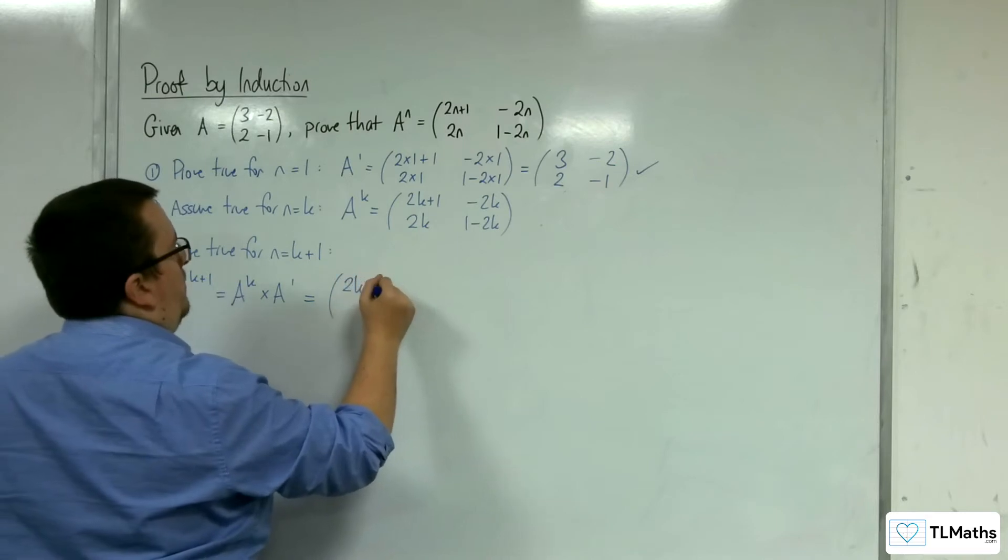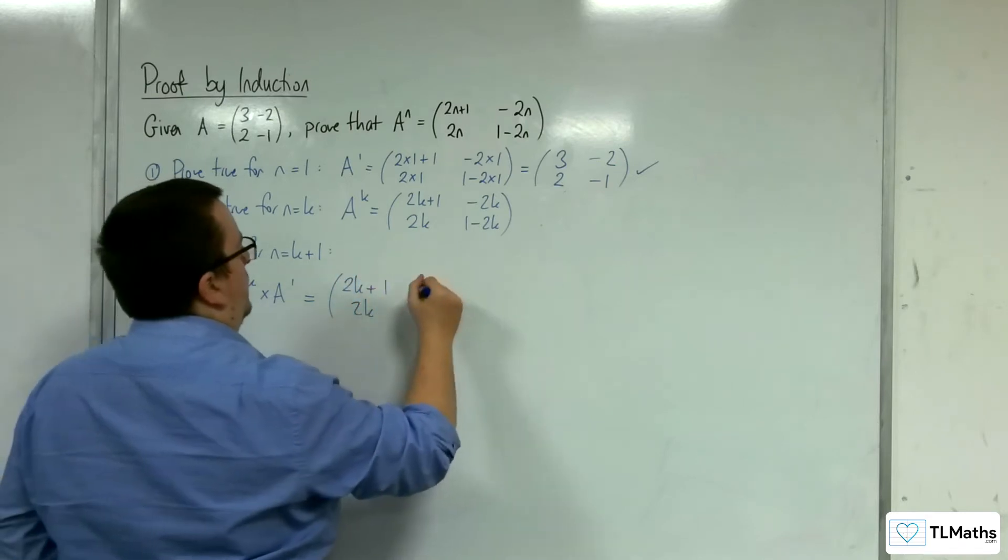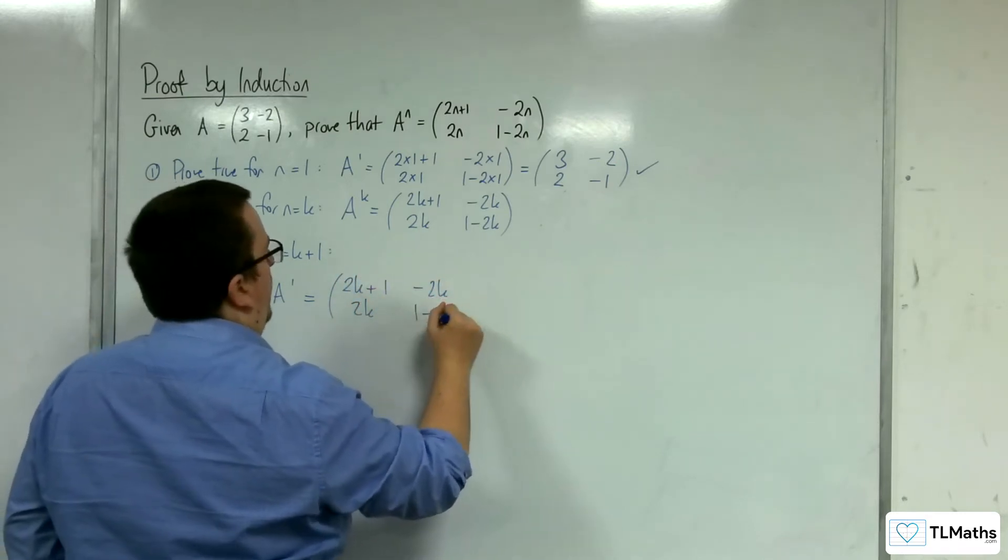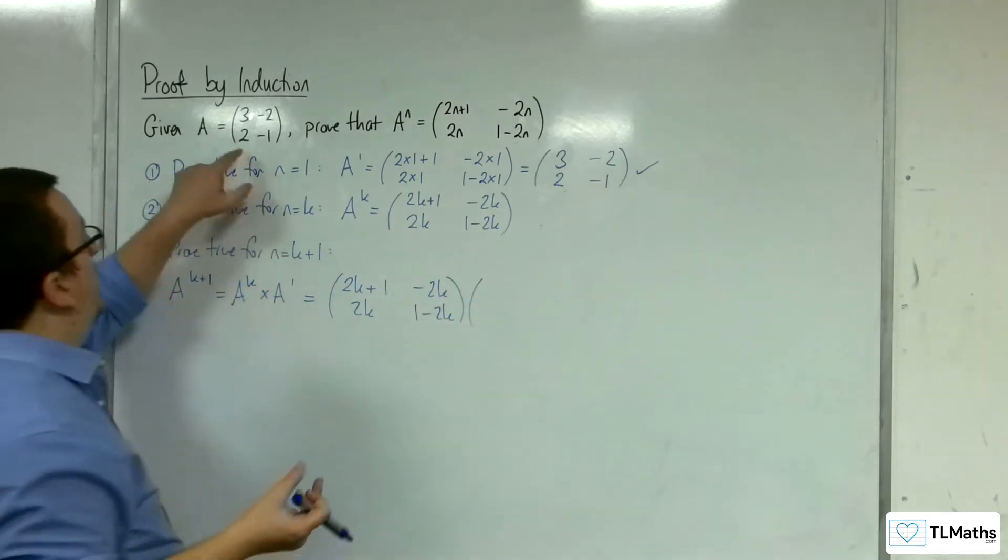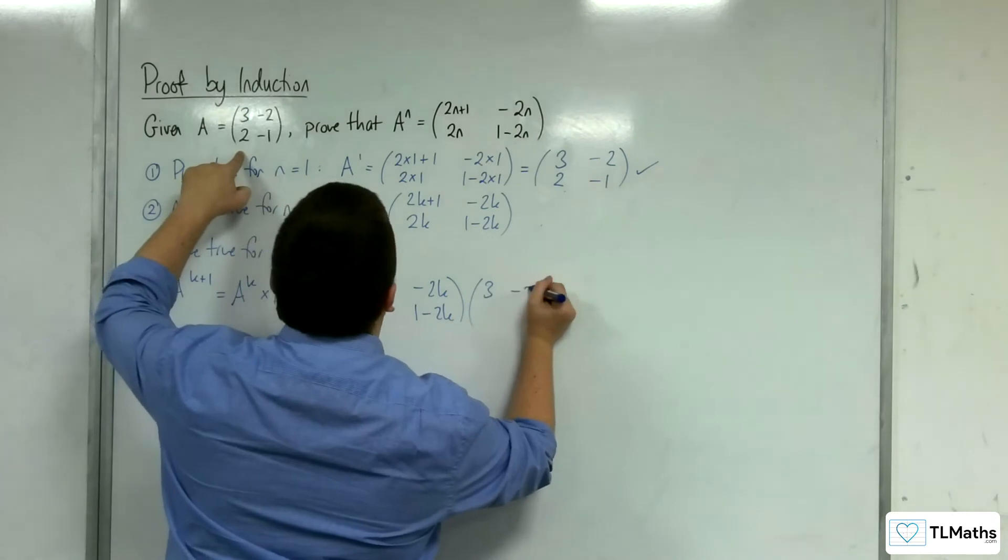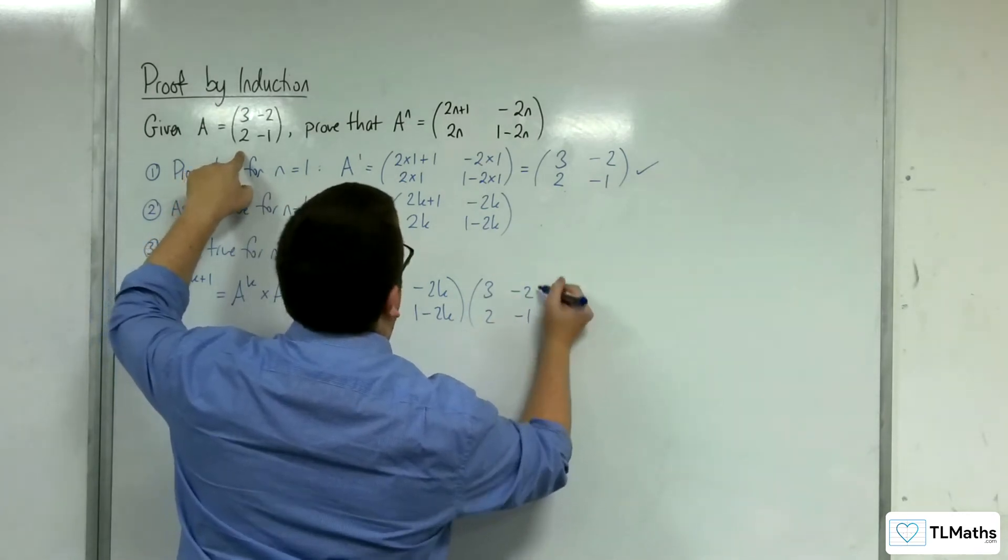So (2k+1, 2k; -2k, 1-2k) multiplied by A, which is (3, -2; 2, -1).